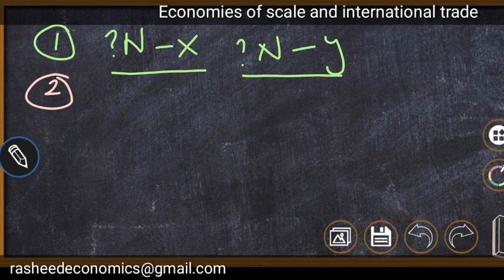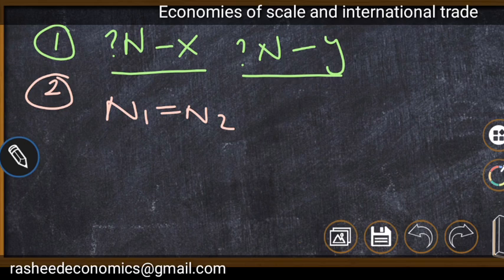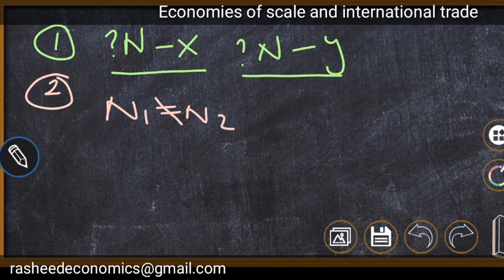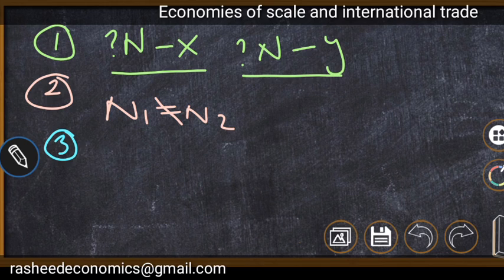The second point is that it is not a necessary condition that the two nations are identical. Nations may or may not be identical — that is not a problem. Beneficial trade is possible even if nations differ in their production conditions, as long as increasing returns to scale are present.